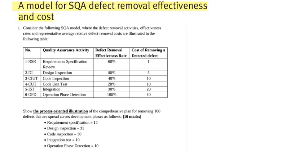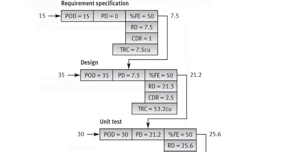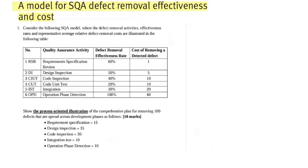In this tutorial we're going to talk about the SQL model for software quality assurance — defect removal effectiveness and cost. I'm not going into theory; I just want to show you how to calculate using the model. The question considers an SQL model where the defect removal activities, effectiveness rates, and representative average defect removal costs are illustrated in a table.